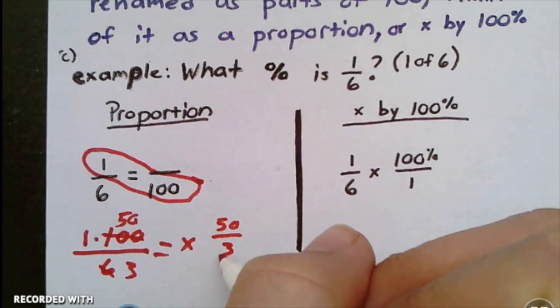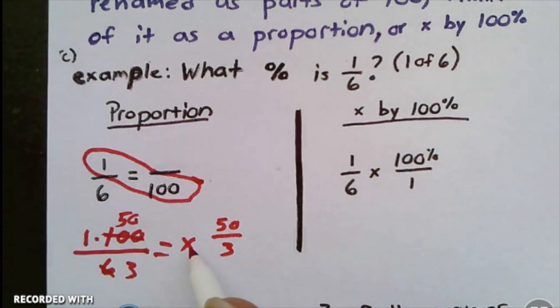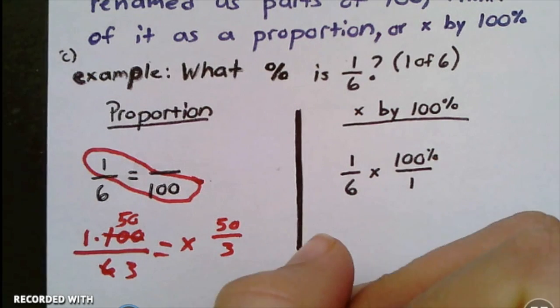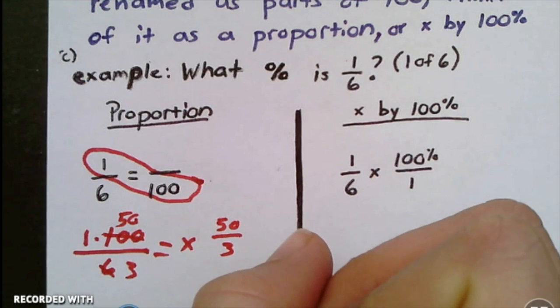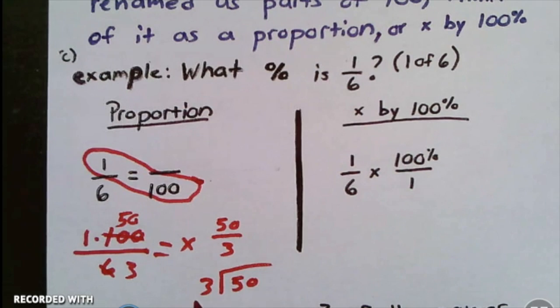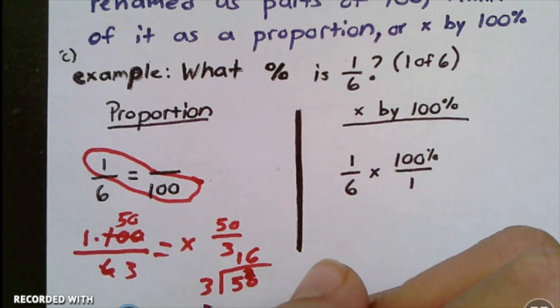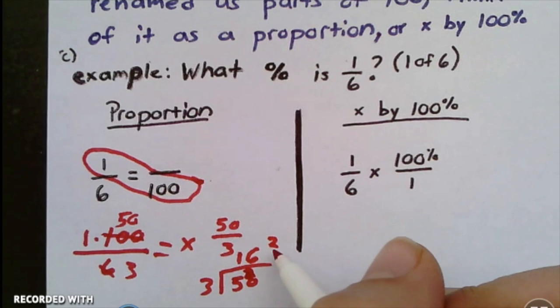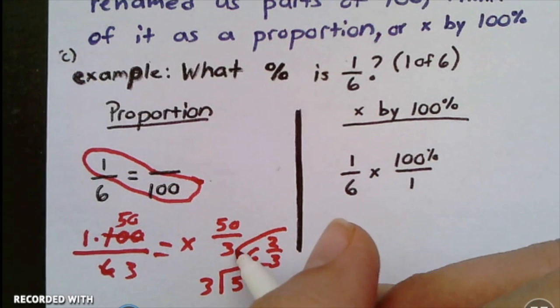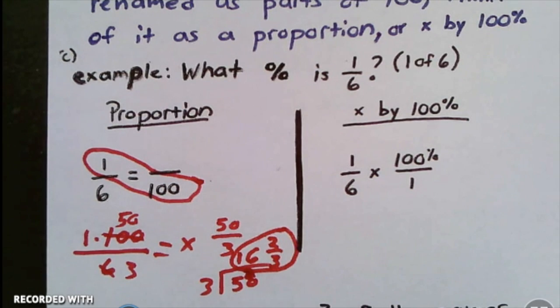Then I'm going to multiply across and get 50 over 3, which means 50 divided by 3. So I'm going to divide 50 divided by 3: 3 goes into 5 once with 2 left over, 3 goes into 20 six times, which is 18, so 20 minus 18 is 2. My answer is 16 and two-thirds percent.